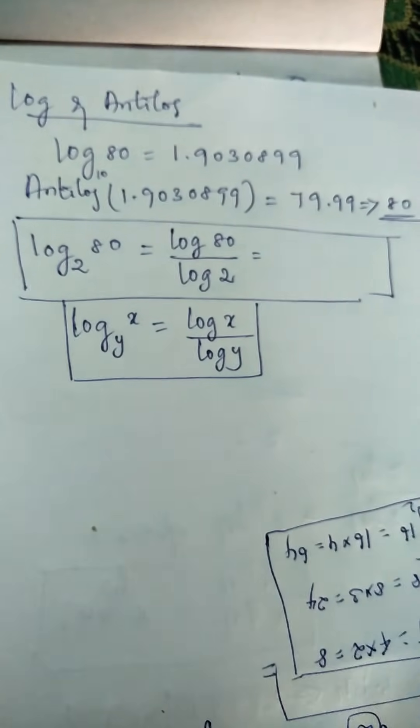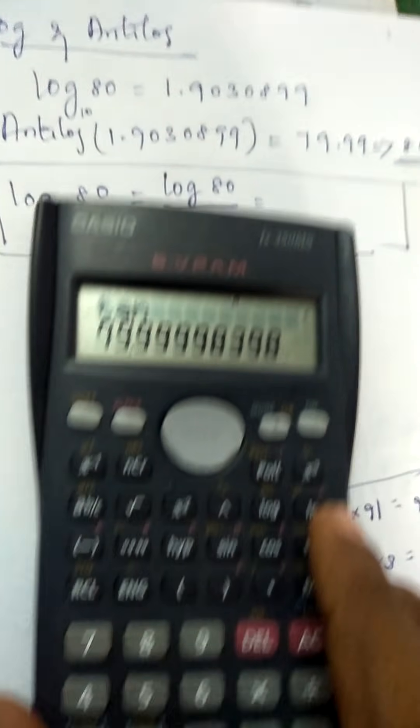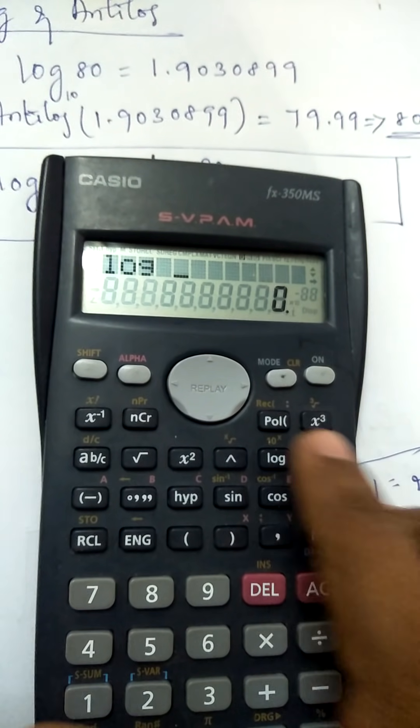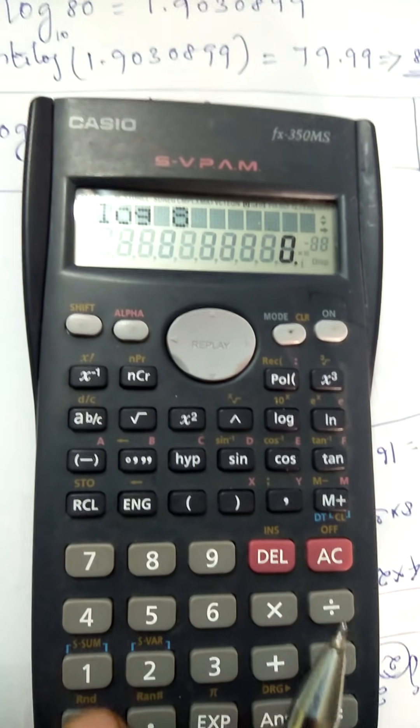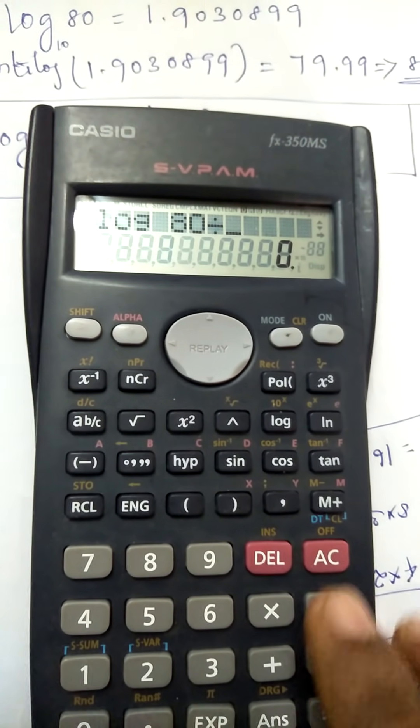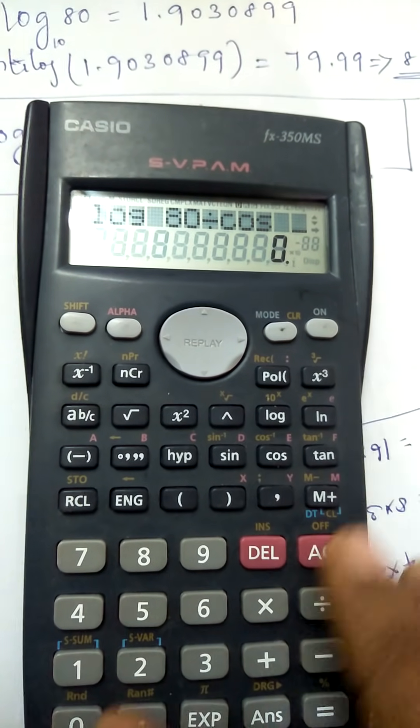Now what you'll do is take the calculator, substitute the values. Log 80 divided by log 2.